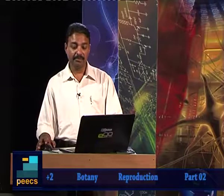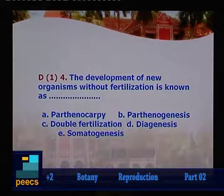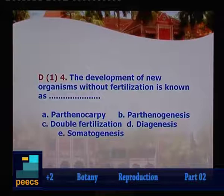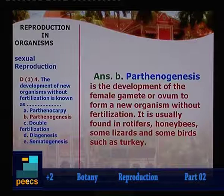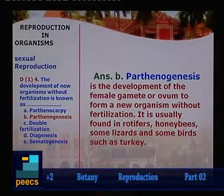Question 4: The development of a new organism without fertilization is known as — Option A: parthenocarpy, B: parthenogenesis, C: double fertilization, D: diagenesis, E: somatogenesis. The correct answer is parthenogenesis — formation of young ones directly from the female gamete without fertilization. Examples include honey bees, rotifers, some lizards, and some birds, which normally undergo parthenogenesis.